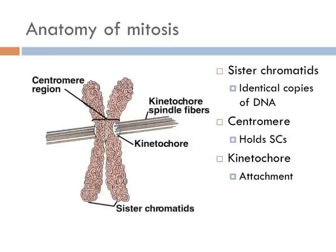These sister chromatids are connected by long spindle fibers. However, they're almost impossible to see with a microscope. But we know they're there, because these fibers are what pull the sister chromatids apart during mitosis. And the place where those spindle fibers connect to the centromere region of the sister chromatid is called the kinetochore.